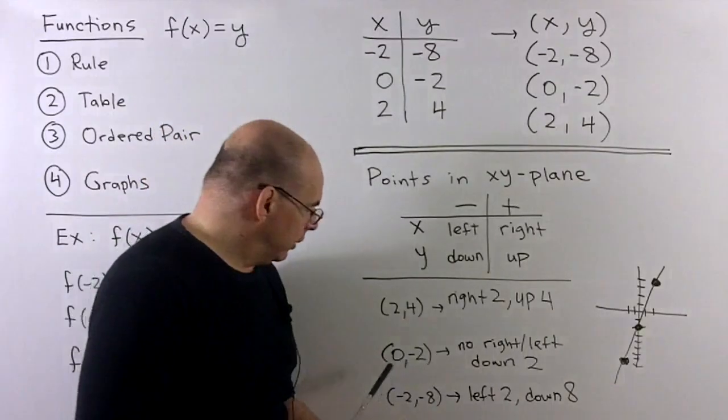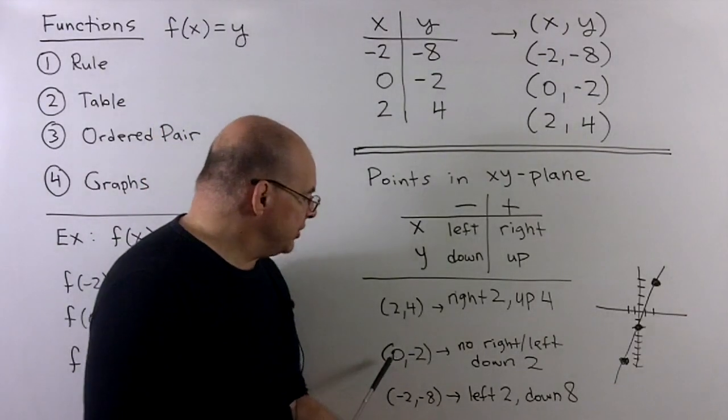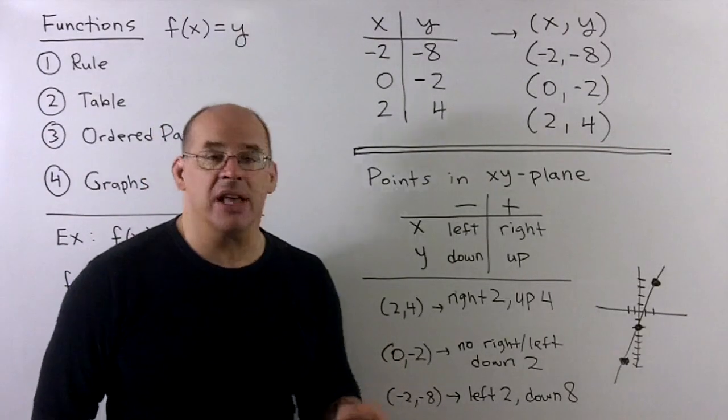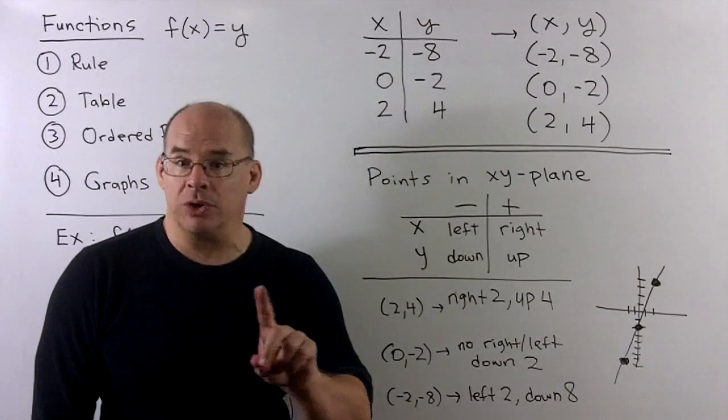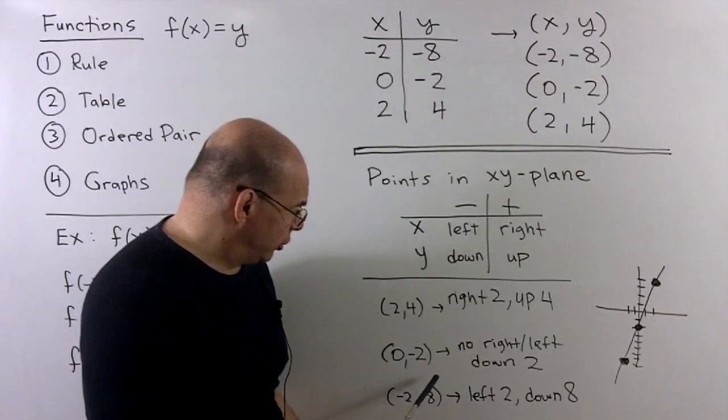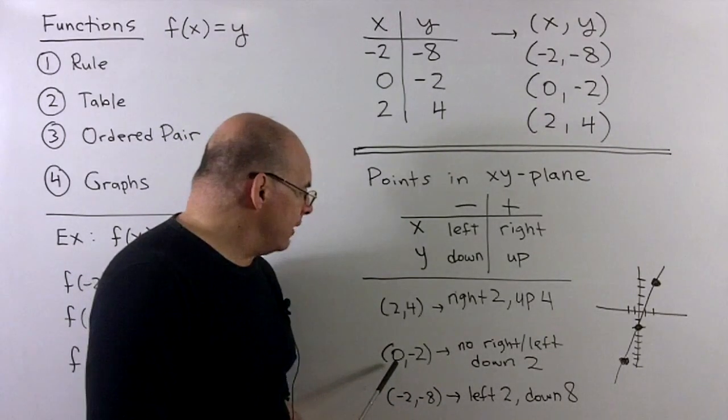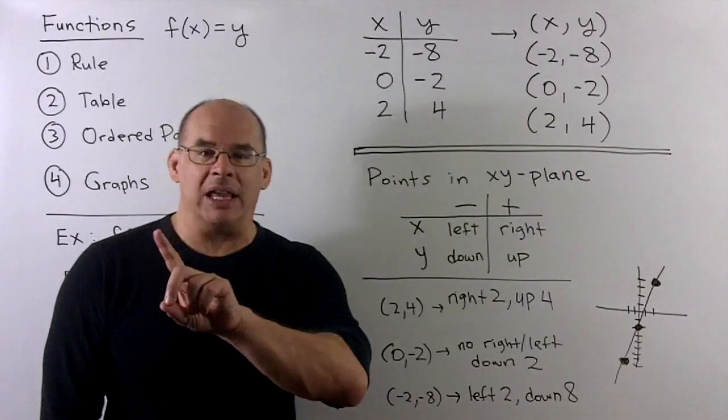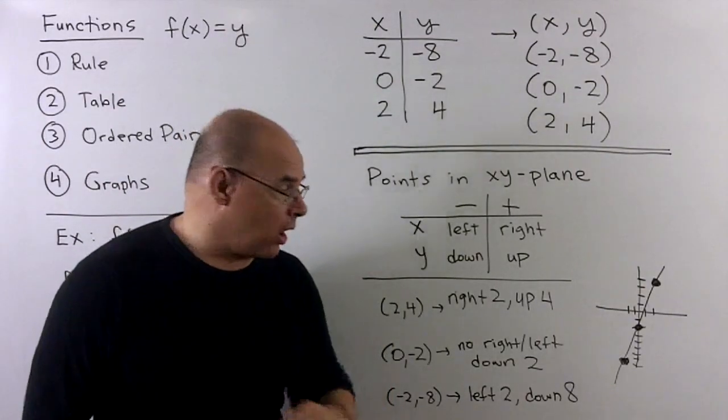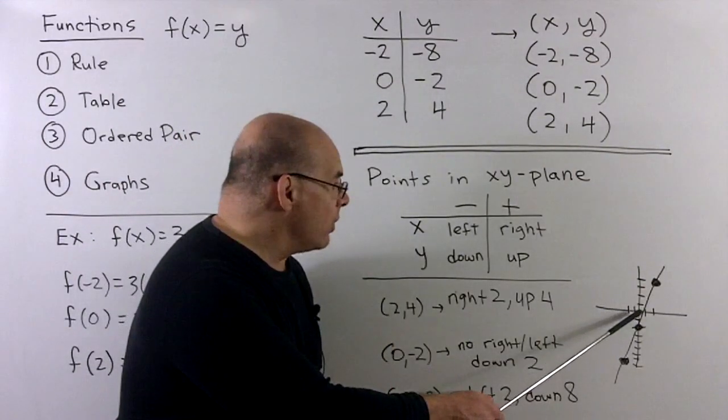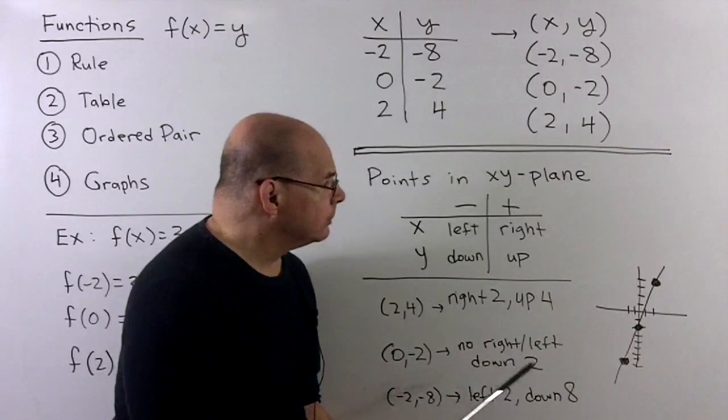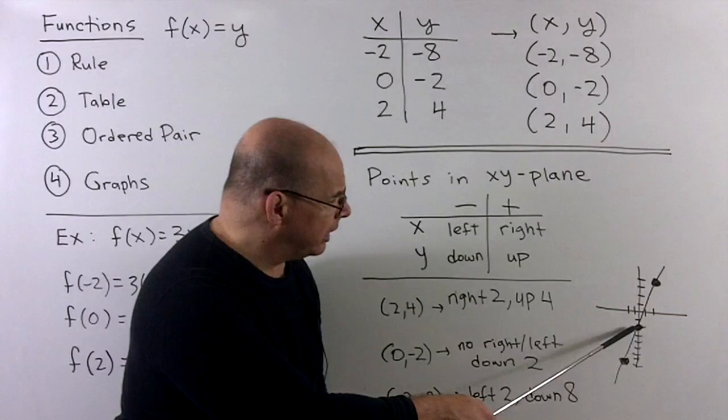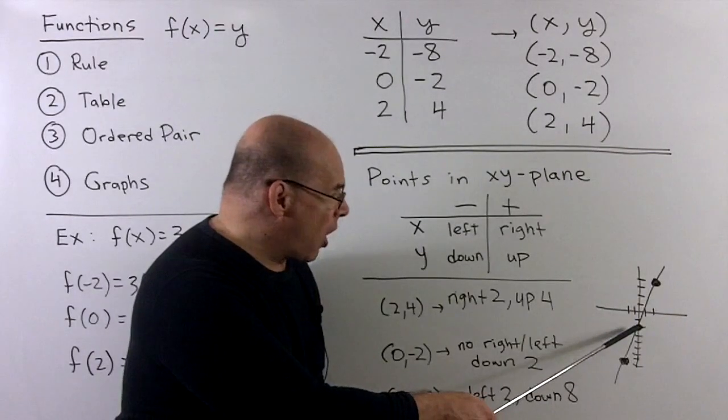For 0 minus 2, how do we translate? Well, the 0 doesn't have a sign, so that says from the origin, you just do nothing relative to which way you're moving. If I have a 0 in for x, that means we don't do any right or left motion off of the origin. We'll stay on the y-axis, and then we're going to move down 2. That gives us this point here. That's going to be our y-intercept.